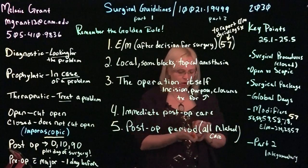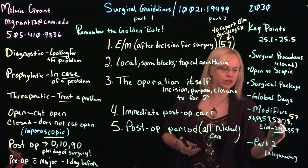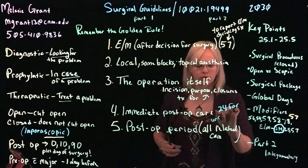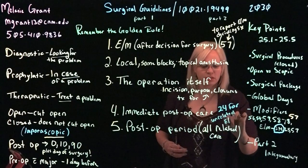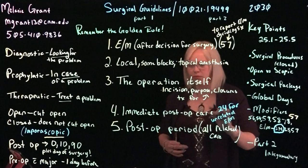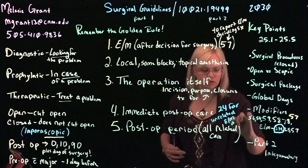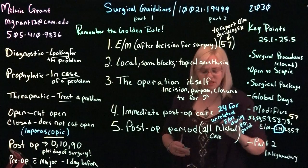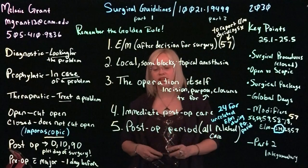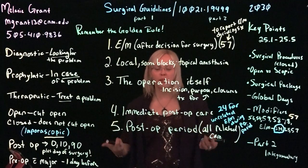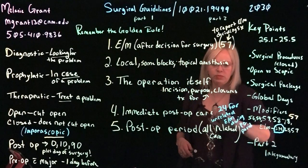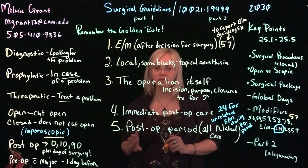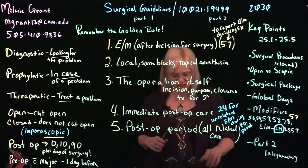A modifier 24 would be appended to an E&M visit if the patient is seen by the provider during the post-operative period for something considered unrelated to the original procedure — for example, if they come in and happen to have a cold. You would append modifier 24 for any E&Ms during that post-operative period, so long as it is clearly documented that it's separate.